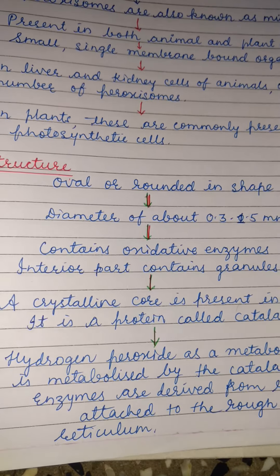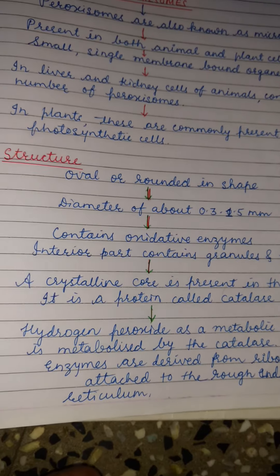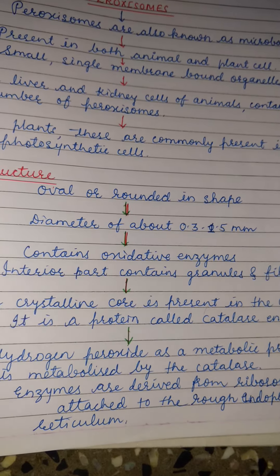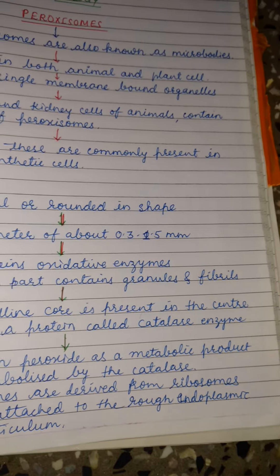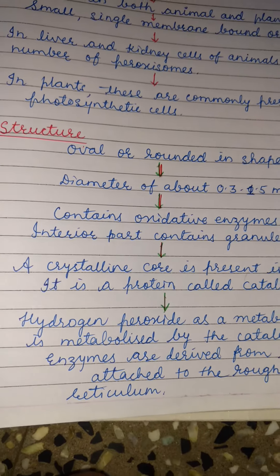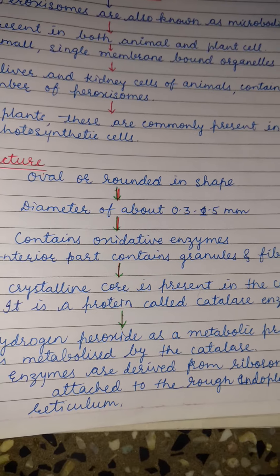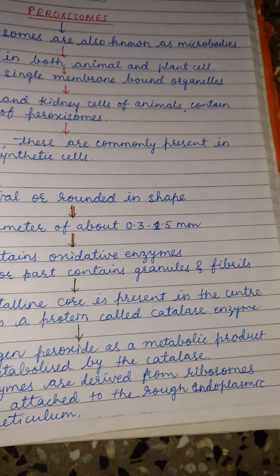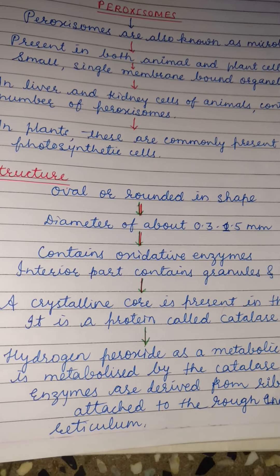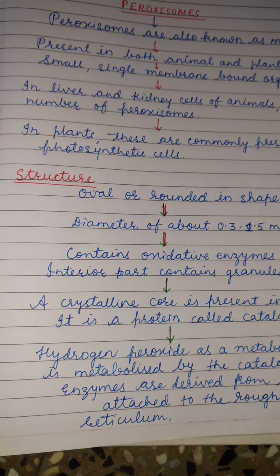The crystalline core is actually a protein called catalase. Hydrogen peroxide is a metabolic product of the cell and it is metabolized by the catalase enzyme. The enzymes present in peroxysomes are derived from ribosomes attached to the rough endoplasmic reticulum. Now we will see functions.